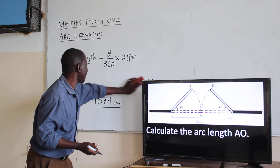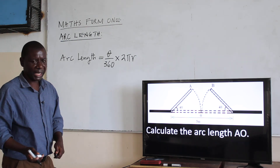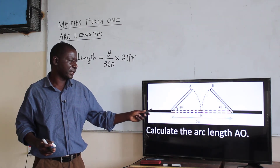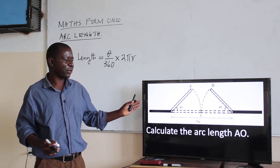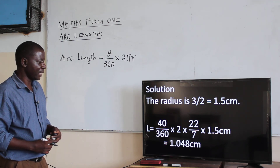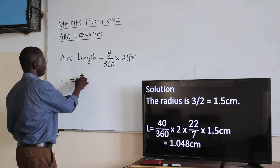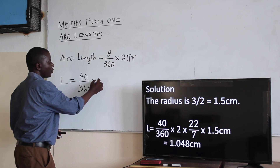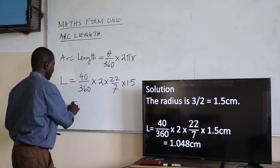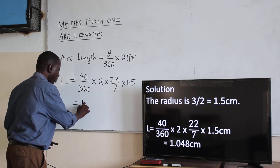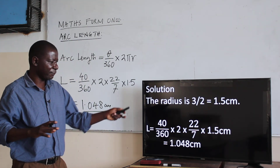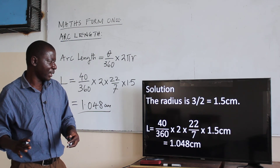We apply our formula. The radius will be half the total distance. If the distance from one end to the other is 3 meters, one flap of the gate has a length of 1.5 meters — that is 3 divided by 2. Substituting: arc length equals 40 degrees divided by 360, multiplied by 2 times pi (22 over 7), multiplied by 1.5. That gives us 1.048 meters — the distance one flap traces as it opens at an angle of 40 degrees.